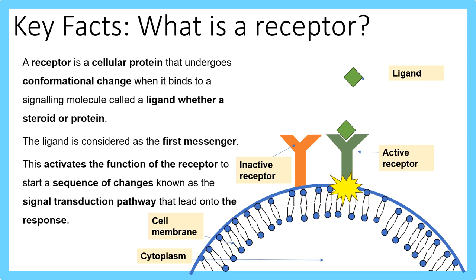The ligand is considered the first messenger because it's the initial signal that first binds to the receptor to become activated before it can make further steps to elicit a response. Here you can see a diagram of an inactive cell surface receptor. When it is activated, it ignites a further reaction such as signal transduction, and all that process requires energy.